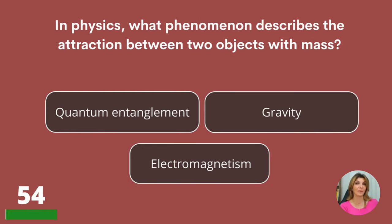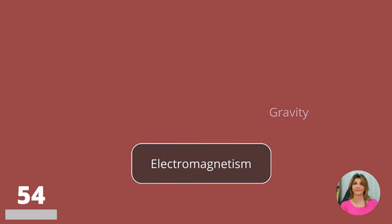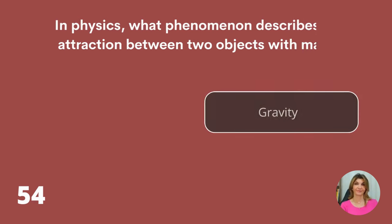In physics, what phenomenon describes the attraction between two objects with mass? Quantum entanglement, gravity, or electromagnetism? Gravity.